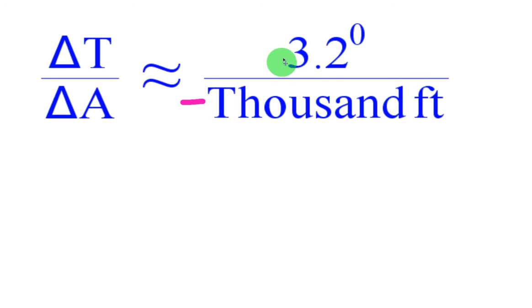And here you go. So this basically means the temperature is going up 3.2 degrees for every thousand foot decrease, which is why this is a negative on the bottom.